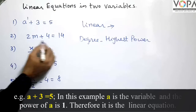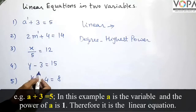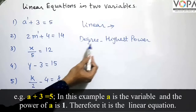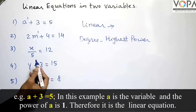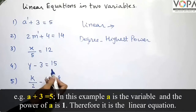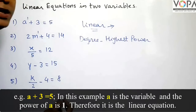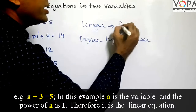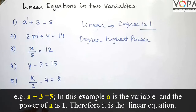Here, the variable is m and the power is 1. In all these equations, the degree — meaning the highest power of the variables — is 1. Therefore, these equations are called linear equations because the degree is 1. So, these are called linear equations.